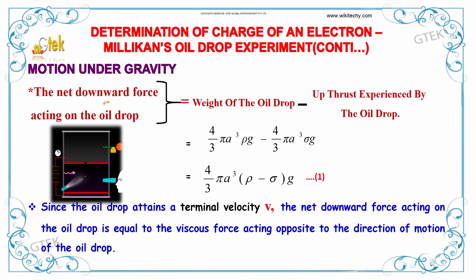The net downward force acting on the oil drop is equal to weight of the oil drop minus upthrust experienced by the oil drop. So 4 by 3 pi a cubed rho into g minus 4 by 3 pi a cubed sigma into g, which equals 4 by 3 pi a cubed times rho minus sigma into g.